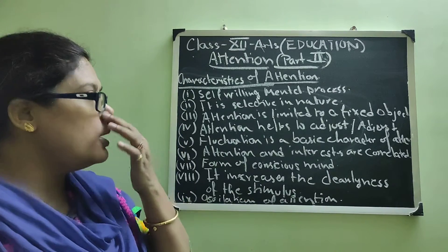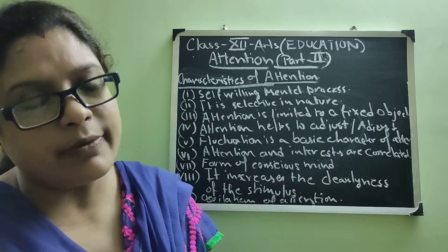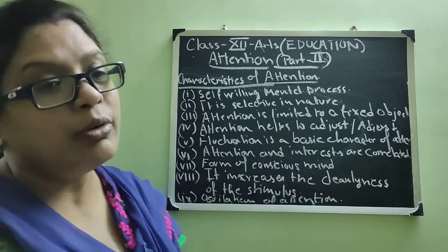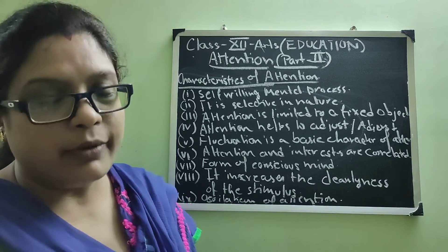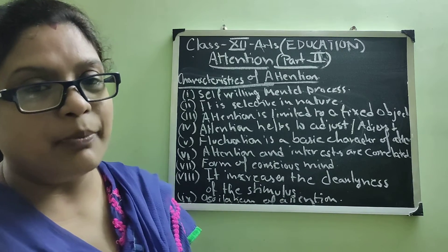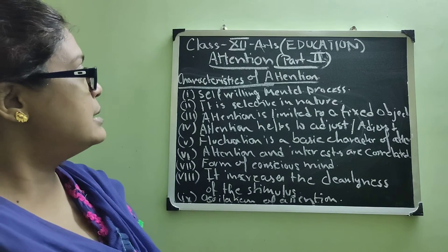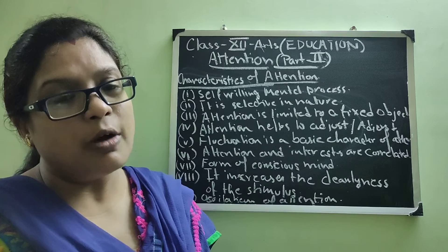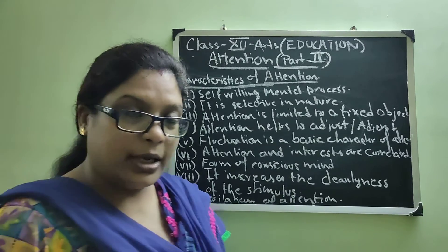So this is all about today — I have given more or less 9 points, more than enough. If you write 6 to 7 points correctly, it is good. Try to describe a little bit more about what we discussed in class, and you can give one example as well. Next day we will start with the determinants of attention — subjective and objective. Thank you.